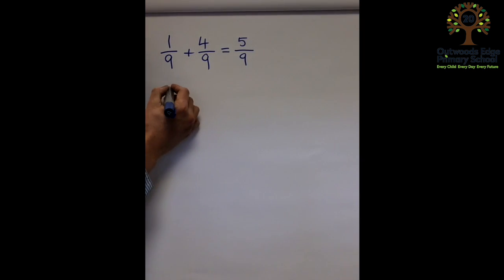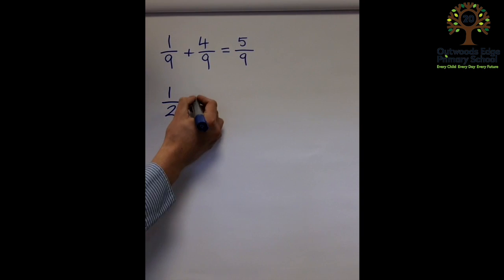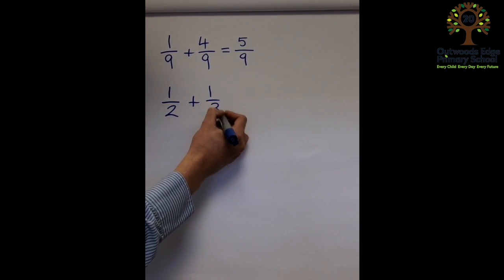If it's different, for example here, we've got a half add a third, the children need to find a common multiple of those two numbers, a half and a third. And I've been teaching them how to do this visually. We've had a visual model for this.